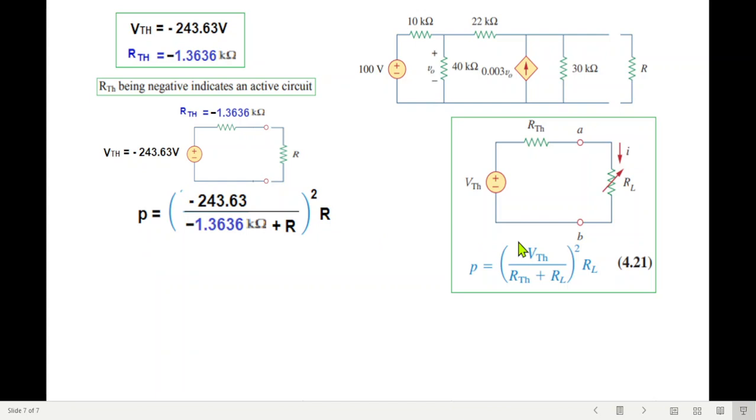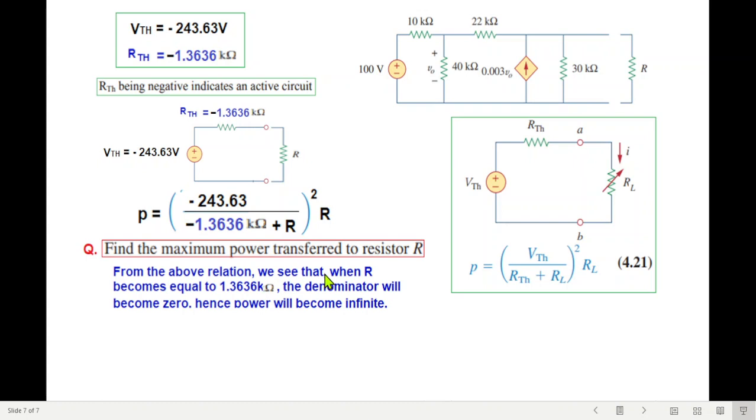So from here, plugging in the value, we get this relation. Now to find the maximum power, the question says find the maximum power transfer to the resistor. You can see from here that power will be maximum when this denominator becomes a minimum. And from the above relation, we see that when R becomes equal to 1.363 kilo, then the denominator will become 0. And anything divided by 0 will give us infinite power, and the power will become infinite.